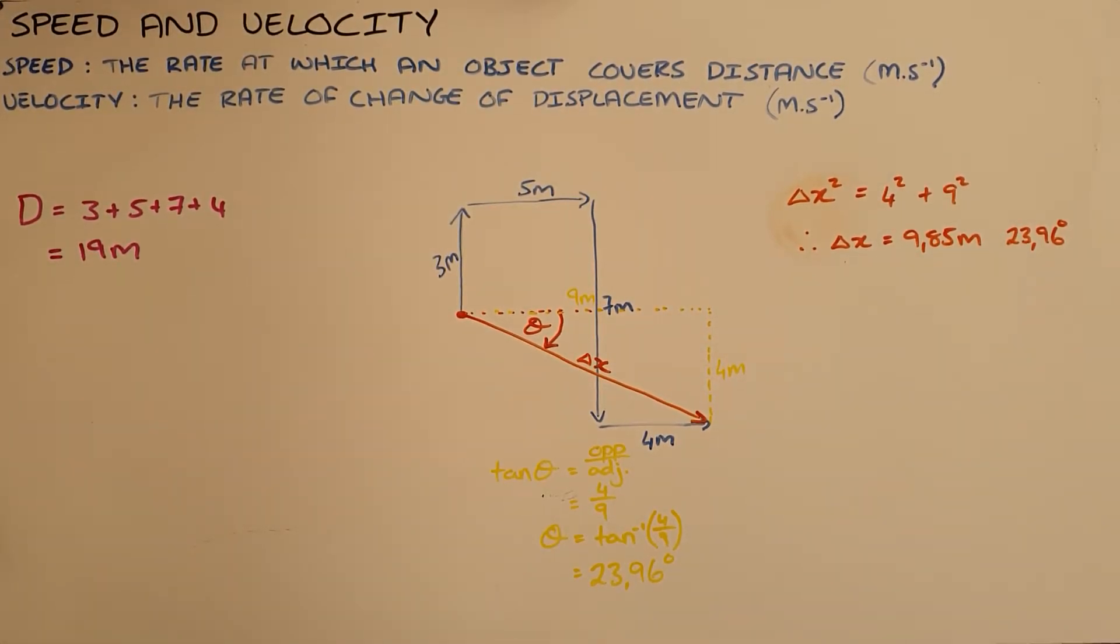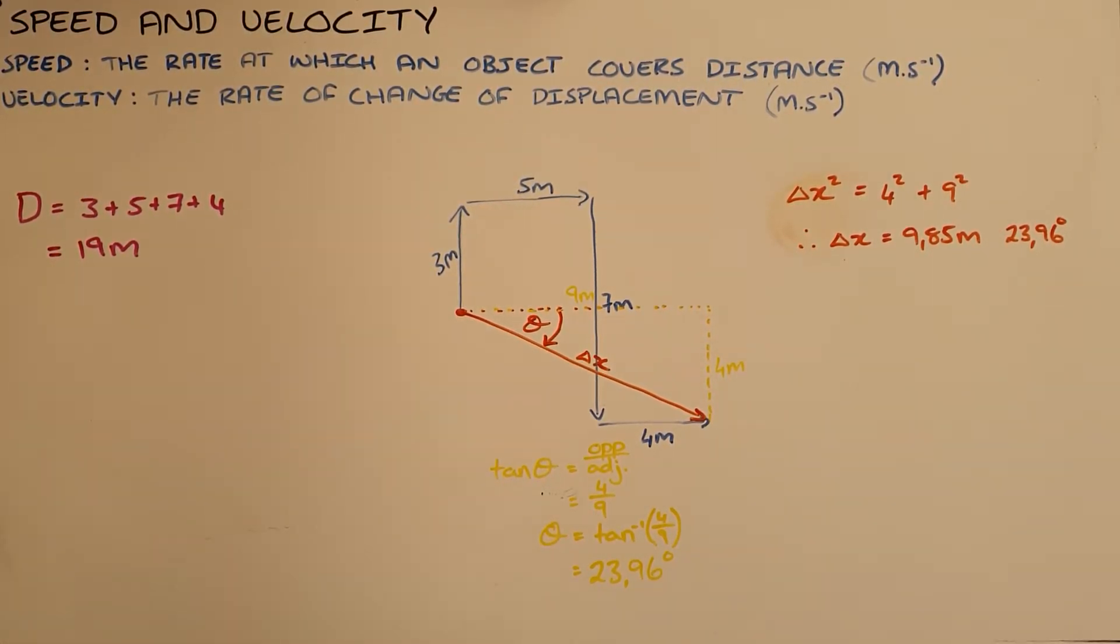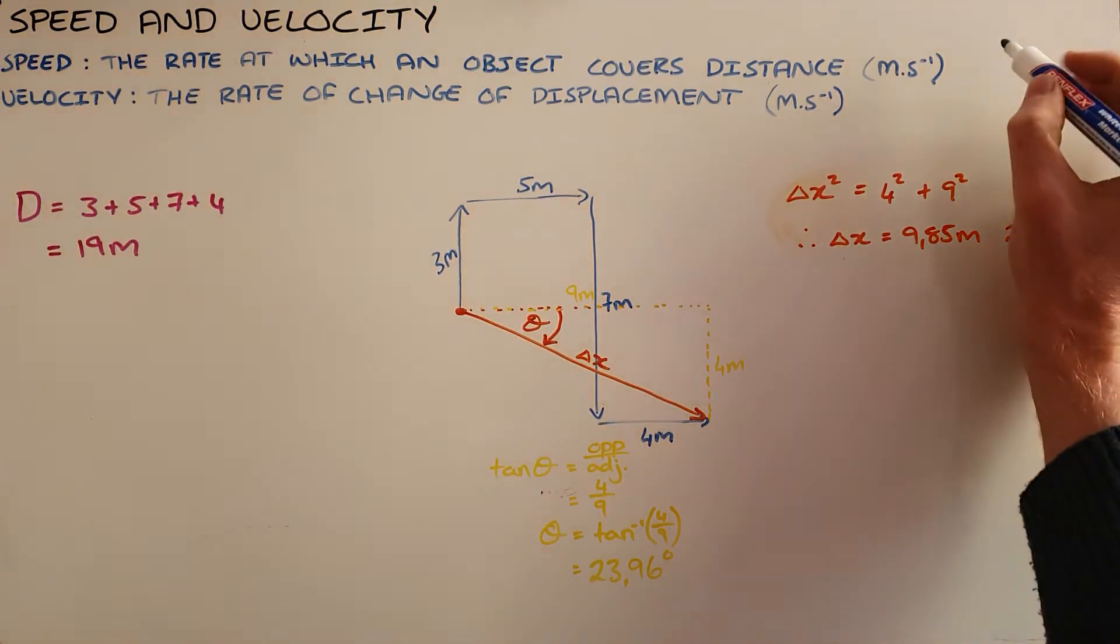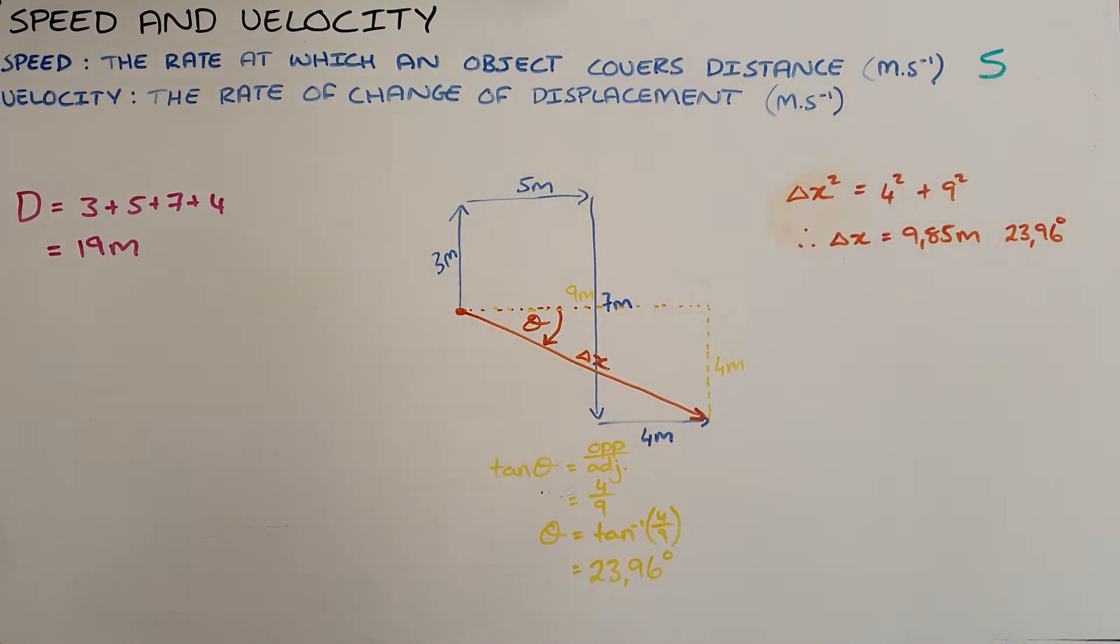Speed is defined as the rate at which an object covers distance. It is measured in meters per second and has the symbol uppercase letter S.